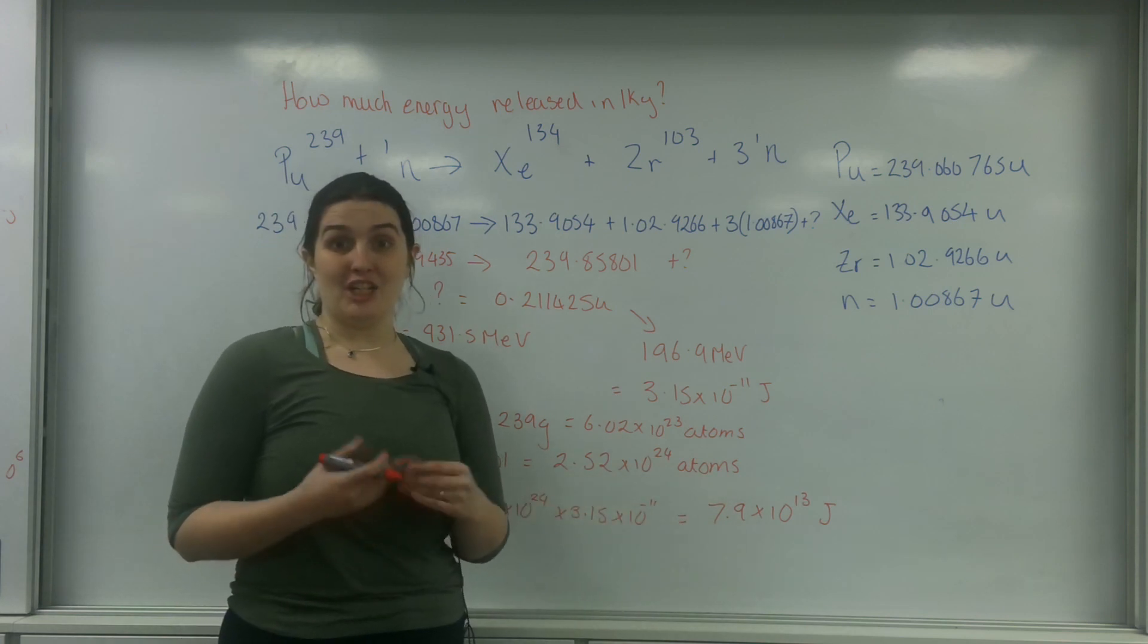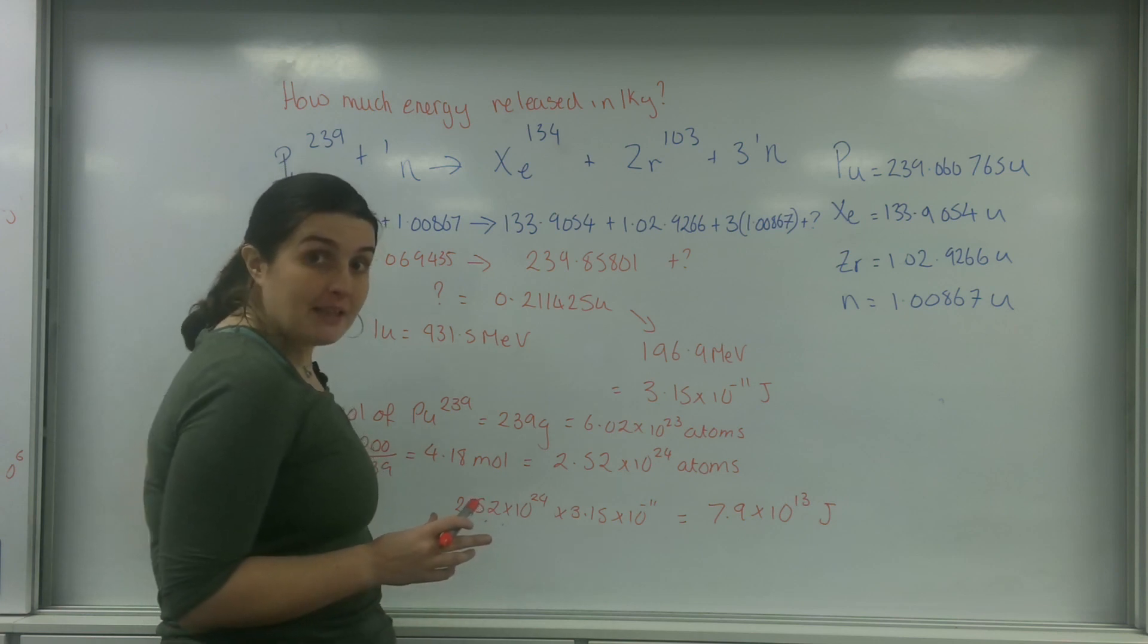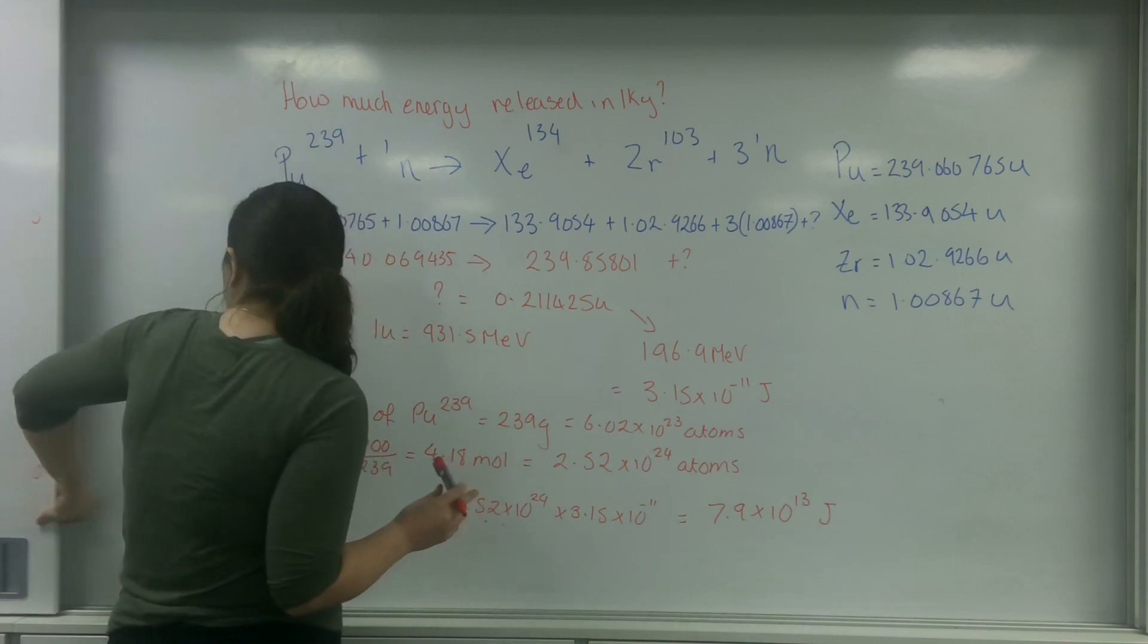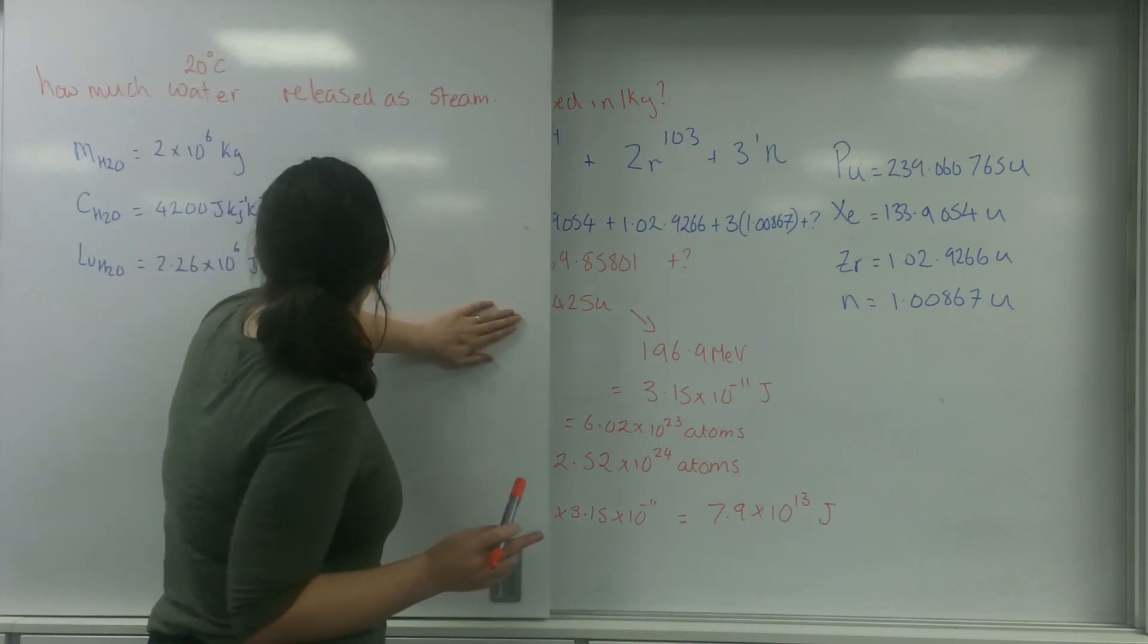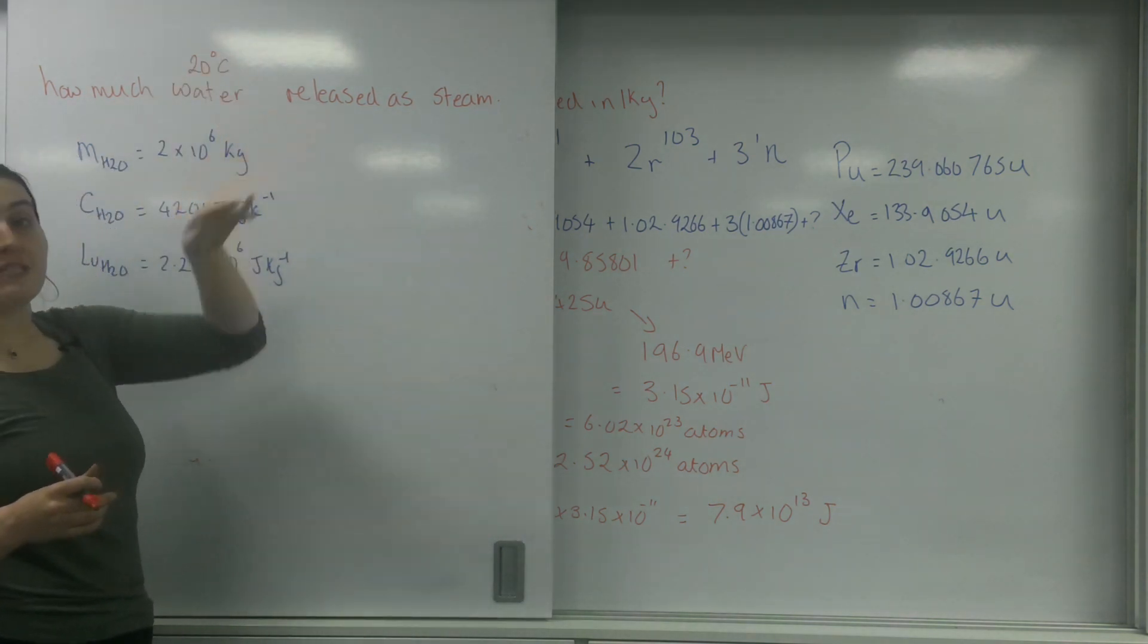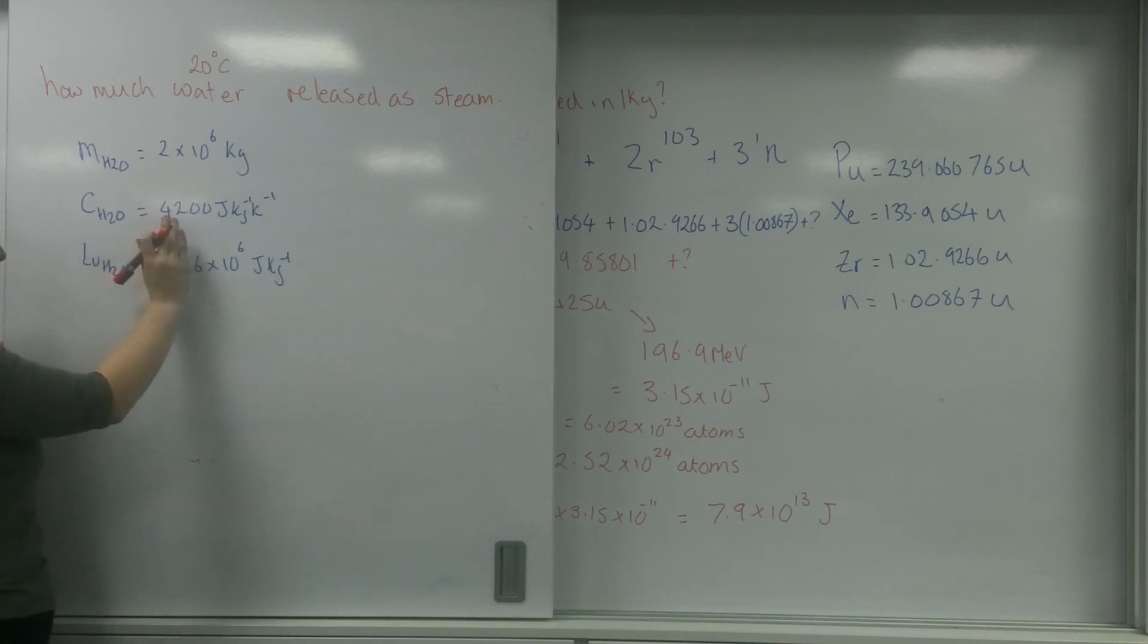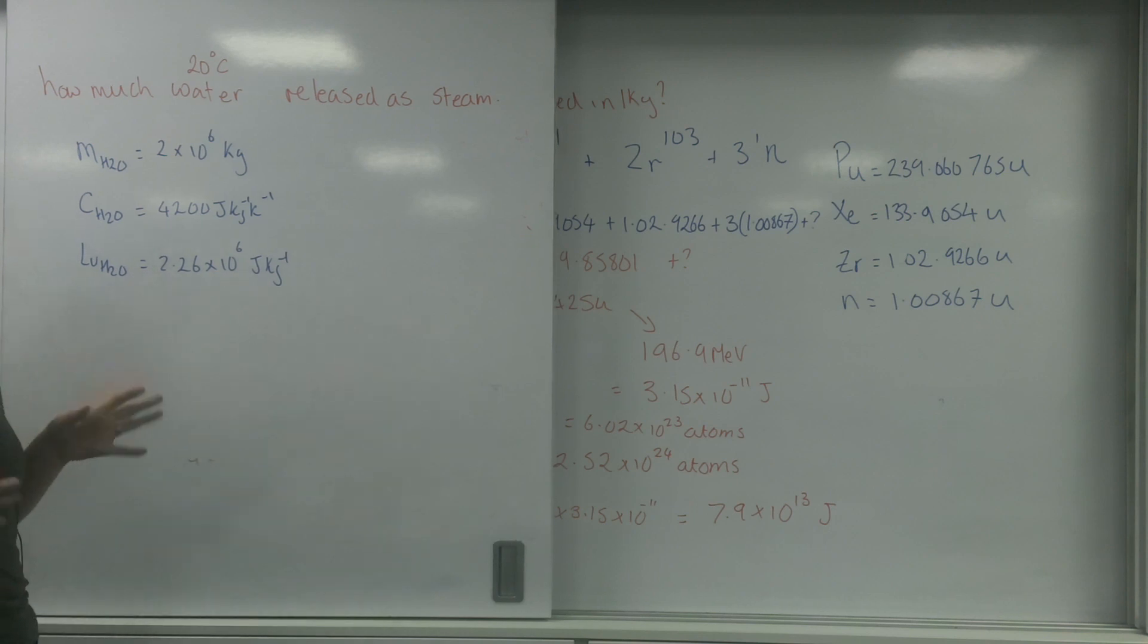Now I'm going to take this information and use it elsewhere with a synoptic link back to thermal. I've got 20 degrees C water and I want to know how much of this was released as steam. The mass of my water is 2 times 10 to the 6 kilos, specific heat capacity is 4200, and latent heat of vaporization is 2.26 times 10 to the 6.